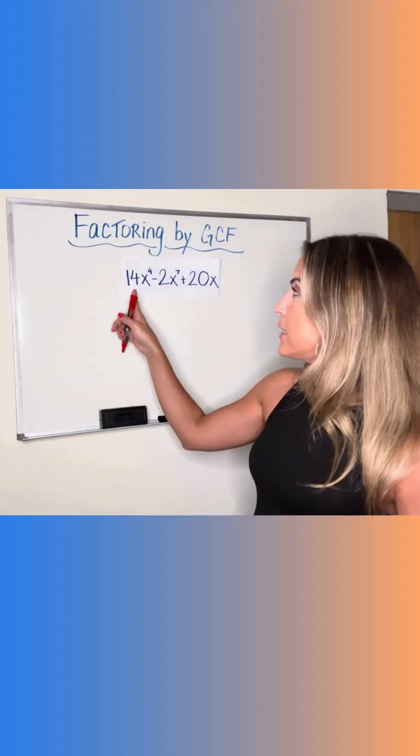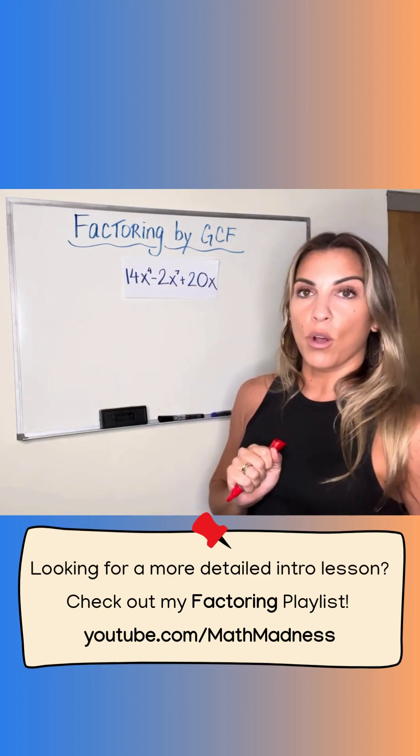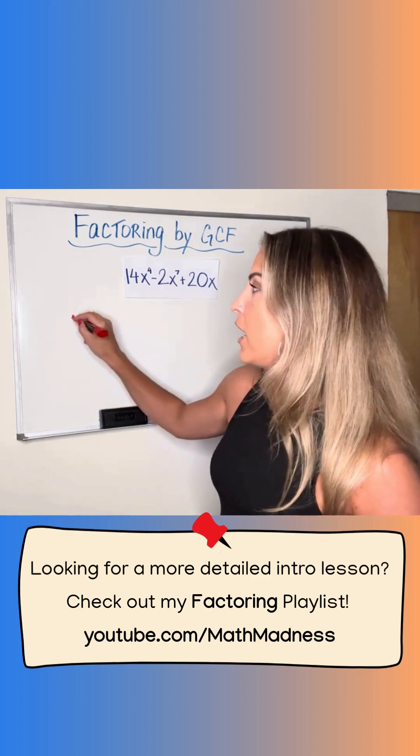So let's look at the numbers first. We have a 14, a negative 2, and a 20. What is the greatest number that can go into all three of those? That is a 2.